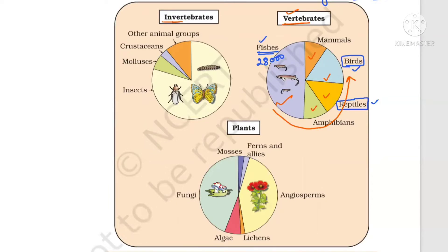For invertebrates: insects are nearly 70% of total animals, so more than 50% of the pie is occupied by insects. The second group is other animal phyla, leaving phylum Arthropoda and phylum Mollusca. Phylum Arthropoda is the biggest phylum in the animal kingdom, with class Insecta being the biggest class. The second biggest phylum is Mollusca. Then other animal groups follow, with very small crustaceans.